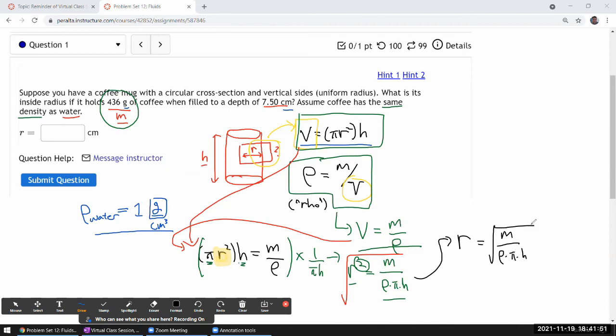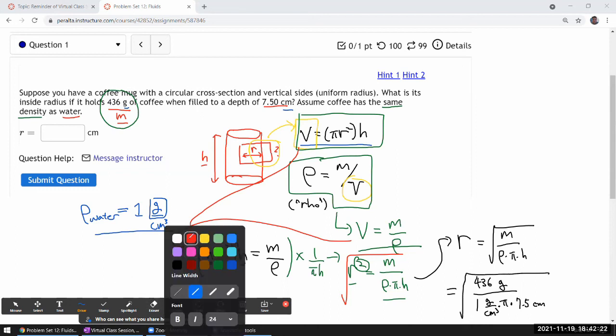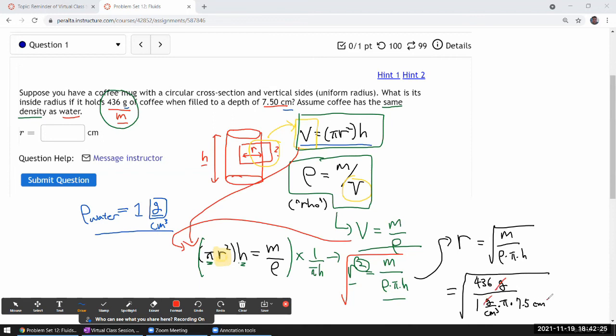Okay, let me write out the numbers that I'm going to be plugging in so that I can double-check that units simplify the way I expected them to. So 436 grams divided by 1 gram per cubic centimeter times pi times height of 7.5 centimeter. Okay, the whole thing square root of it. Let's work out the units. I have grams that cancel out. One factor of centimeter cancels out this centimeter squared.